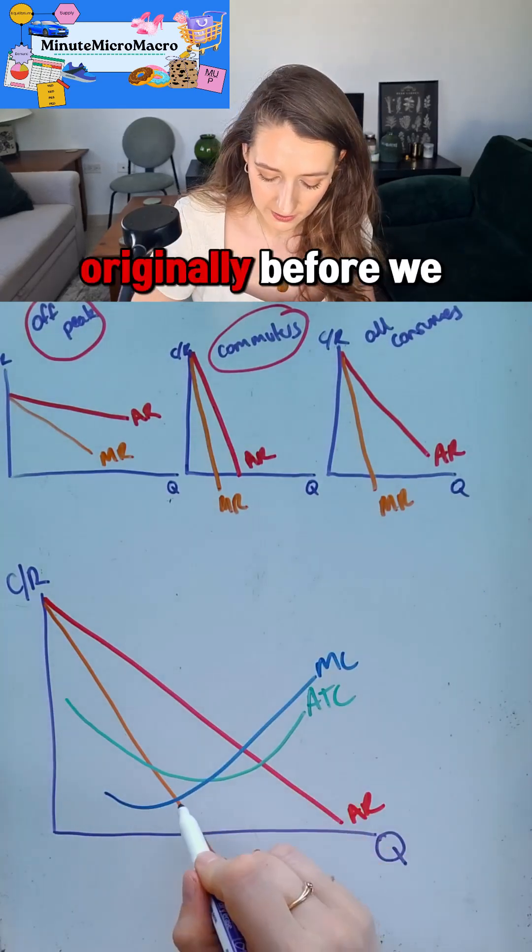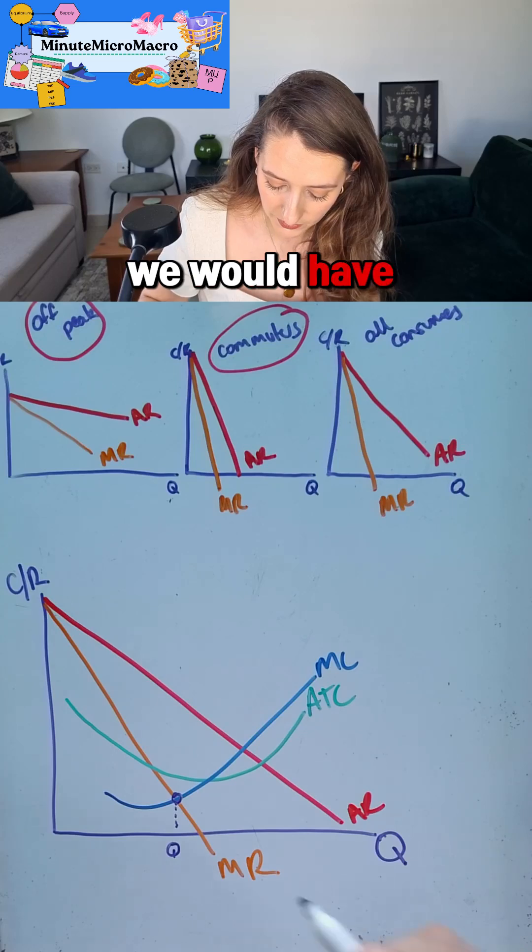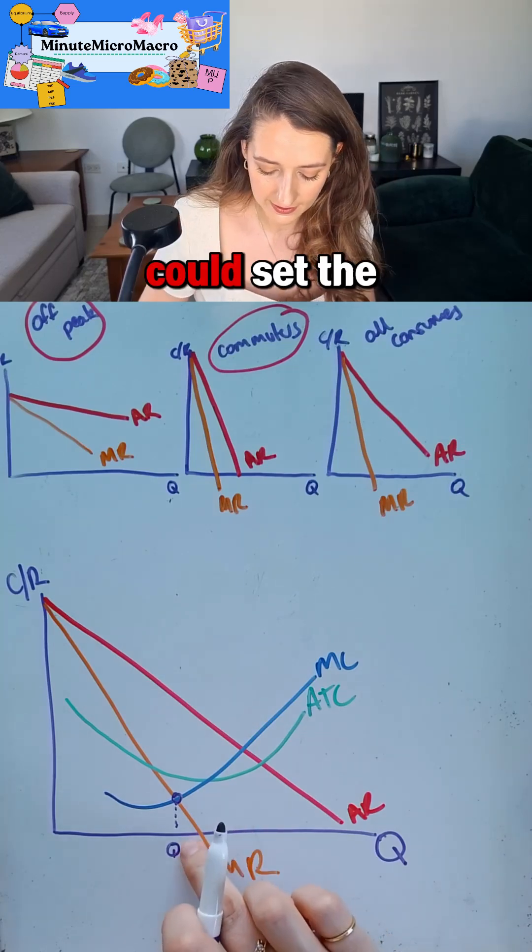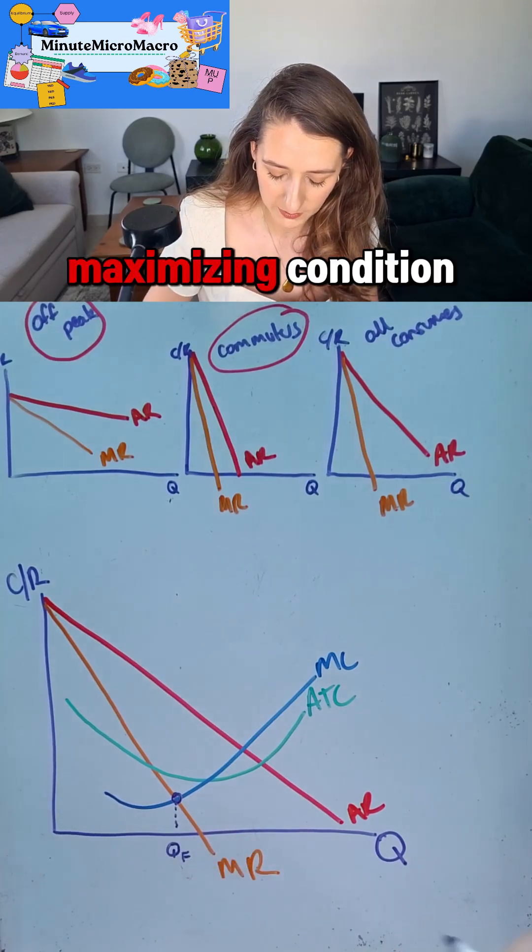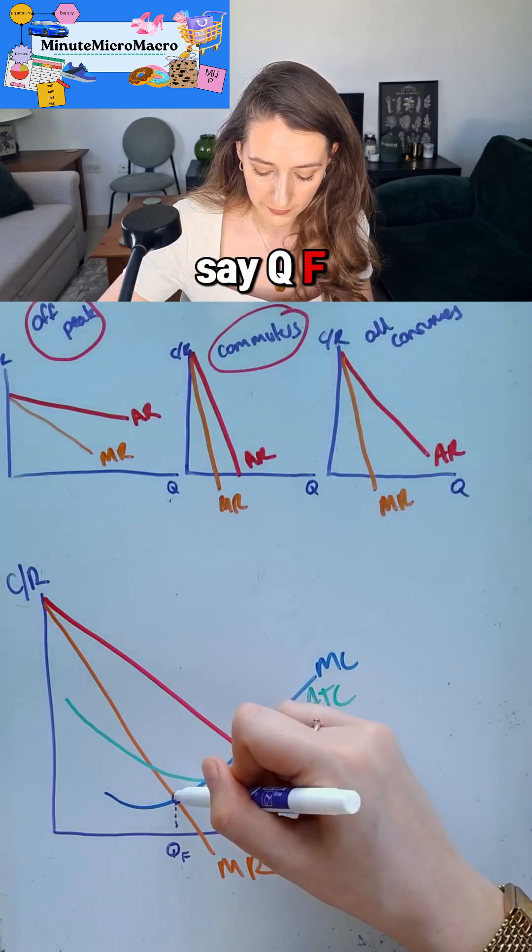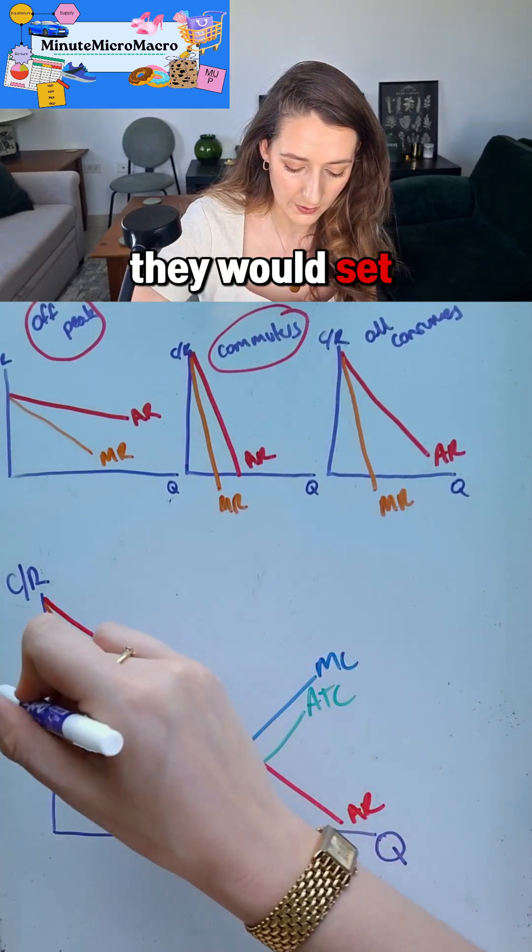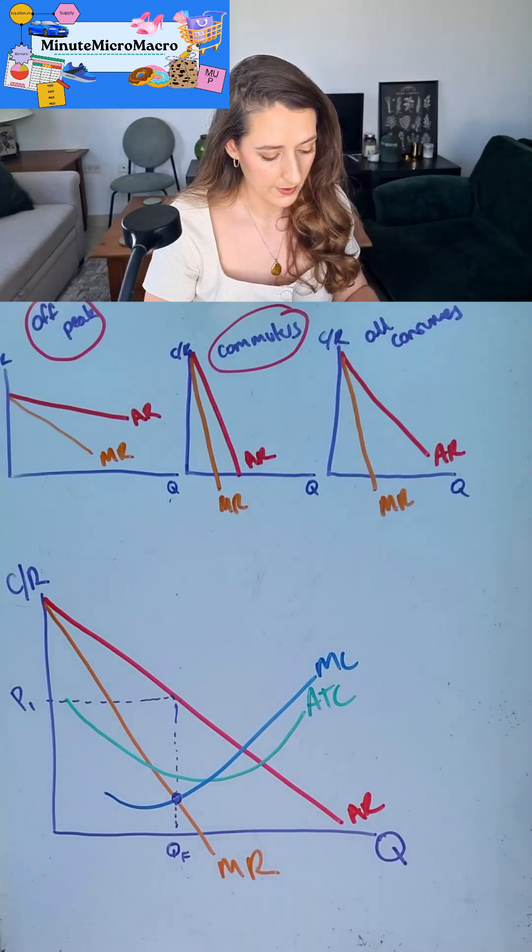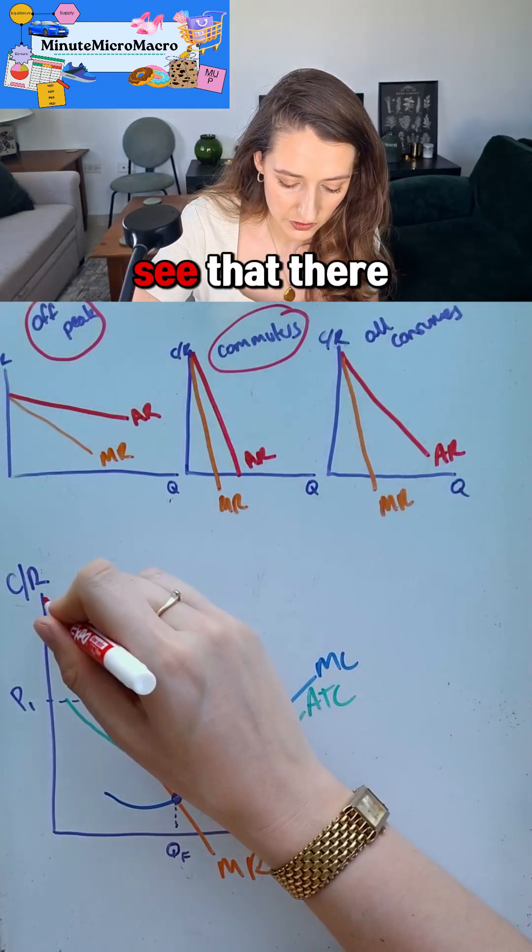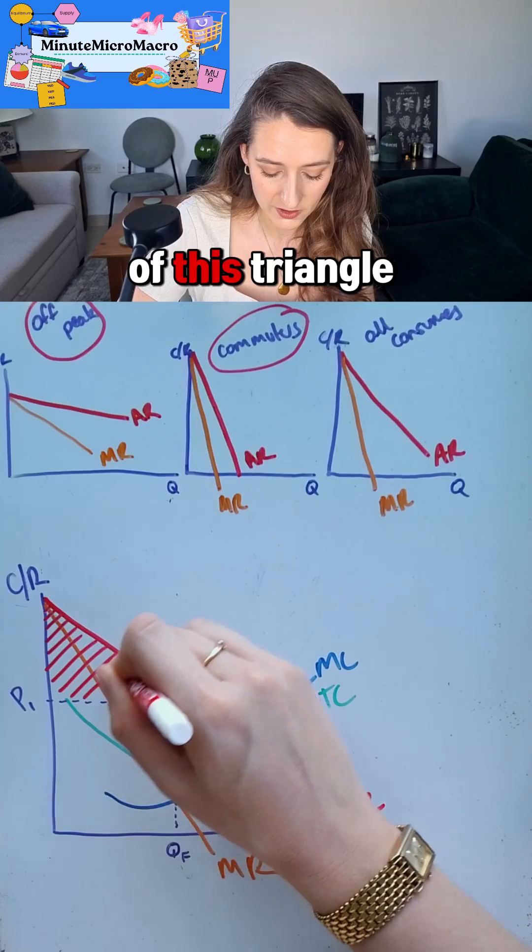So I'm going to set quantity at qf, then the price they would set would be P1, and we know they would make a profit. Now we can see that there is a consumer surplus of this triangle.